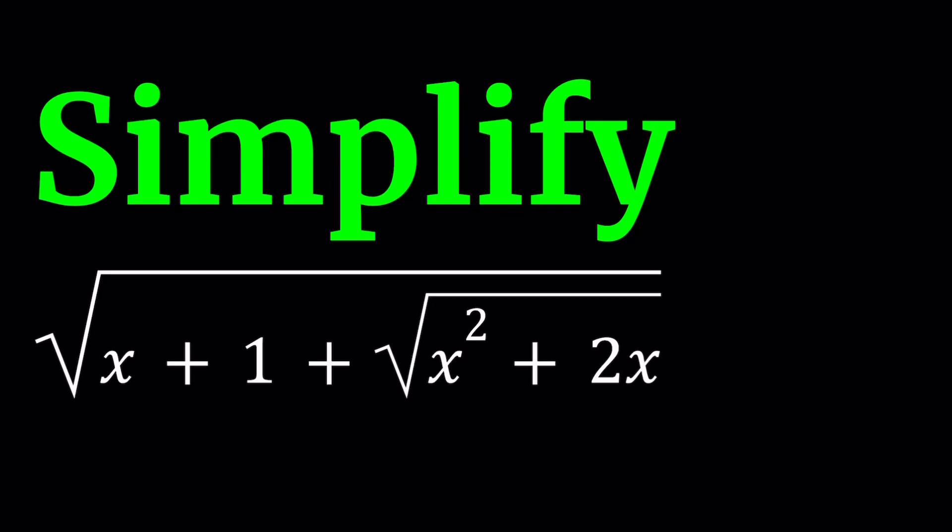Hello everyone. In this video, we're going to be simplifying a radical expression. We've done similar problems before. I'm going to share the links down below. We have the square root of x plus 1 plus the square root of x squared plus 2x. And we're going to simplify this expression, something that works for all values of x for which this is well defined.